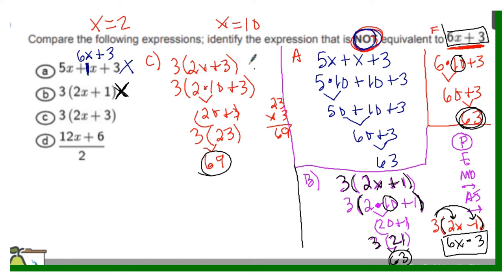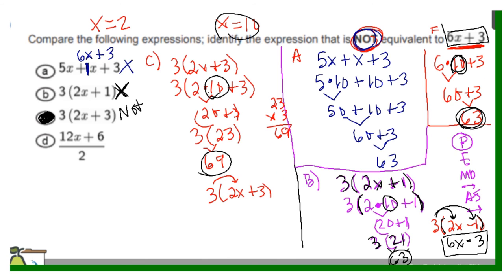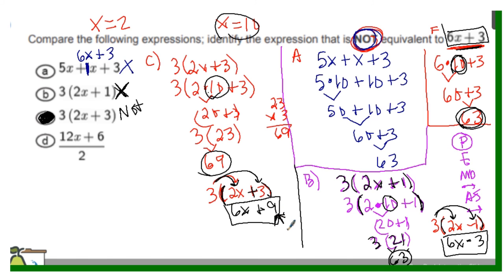Since 69 is not equivalent to 63 when 10 is substituted in for x, option C is not equivalent to the original expression. Using the distributive property confirms this: distributing the 3 gives 3 times 2x plus 3 times 3, which is 6x plus 9. The coefficient 6 matches the original, but the constant is 9 here versus 3 in the original, so these expressions are clearly not equivalent.